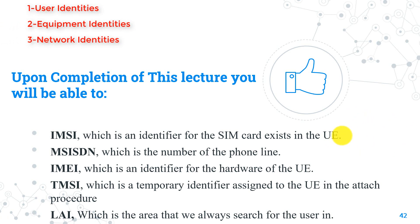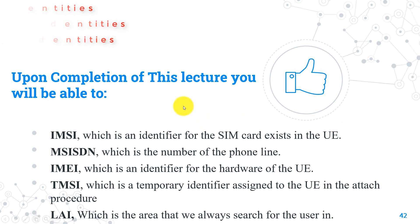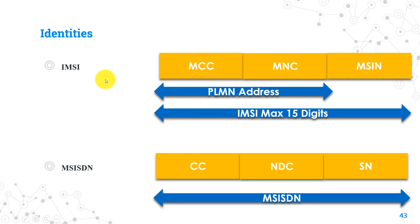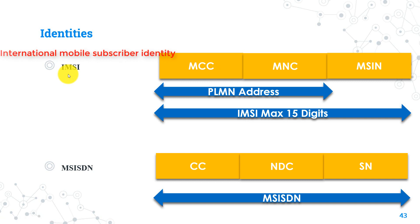Let's first start with the user identities. The most important identity we have here is the IMSI. IMSI is an abbreviation of International Mobile Subscriber Identity. When a normal user goes to the store of any mobile operator, like Vodafone, Orange, or BT, and buys a SIM card, this SIM card contains a unique code which we call IMSI. So IMSI is a unique identifier for each SIM card.